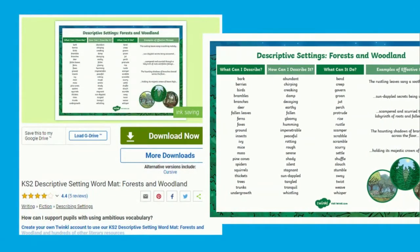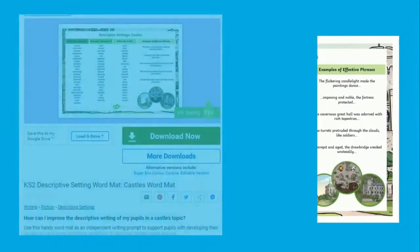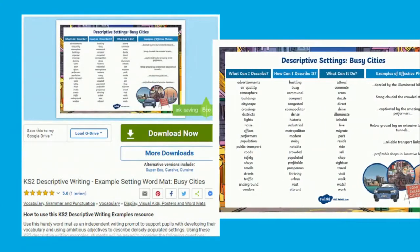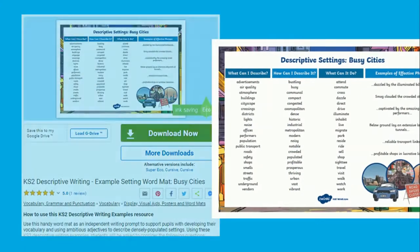Twinkle has a whole range of descriptive word maps focusing particularly on settings. Each word map contains a selection of descriptive words which relate to a particular location, making your students' writing more imaginative.